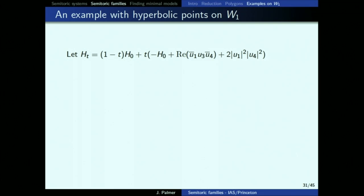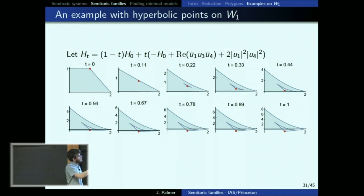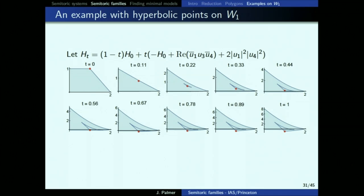One more example: a system that's not a semi-toric family but has a nice picture indicative of future work. You start with an elliptic-elliptic point; as t increases it becomes focus-focus for a while and leaves the boundary. At some point, one-parameter families of rank-one points start coming out of it — these are the hyperbolic points, which are disallowed in semi-toric systems. What you have is a hyperbolic triangle: inside the triangle the fibers aren't connected, one boundary is where fibers become connected (two tori crashing), and the other boundary has elliptic-regular points.